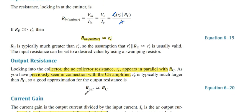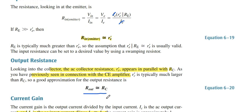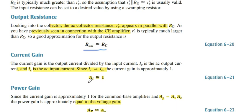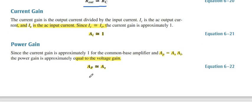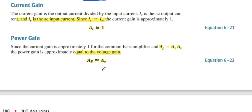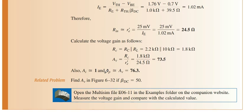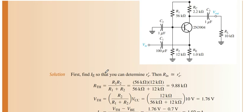Output resistance is equal to RC. Now the current gain AI: IE is nearly equal to IC, so current gain is equal to 1. The power gain is equal to the voltage gain because the current gain is 1. This is the example related to the above topic; you must read it carefully.